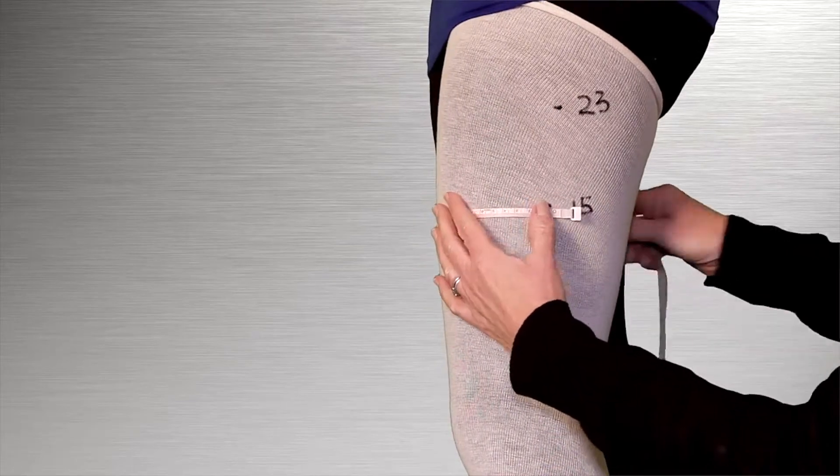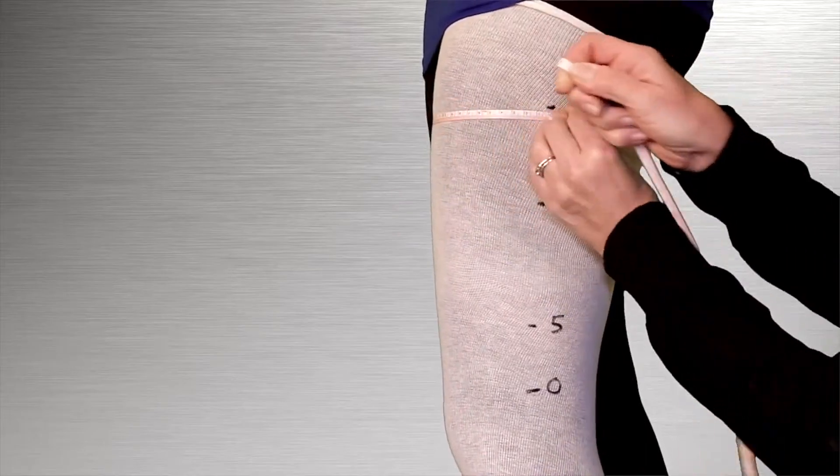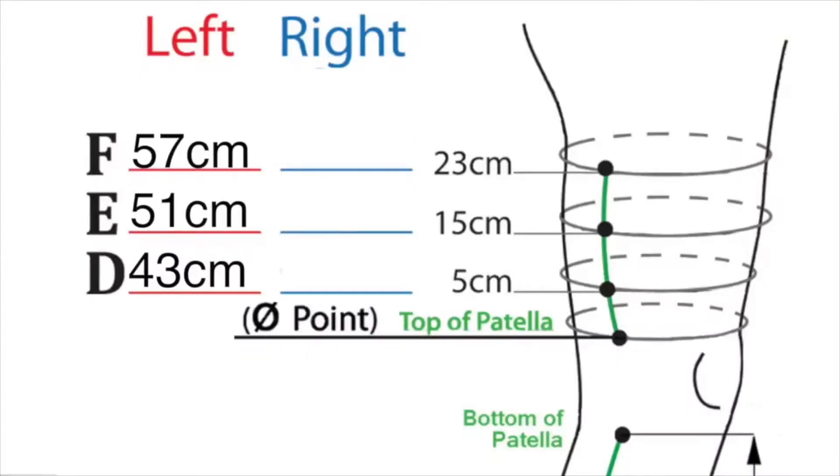Measure the remaining circumferences at the 15 and 23 centimeter locations and record the values on lines E and F respectively.